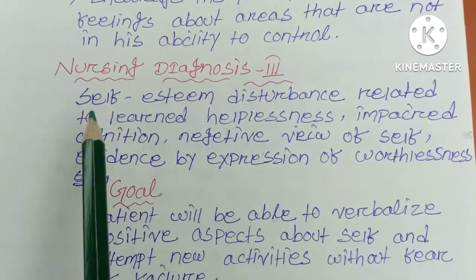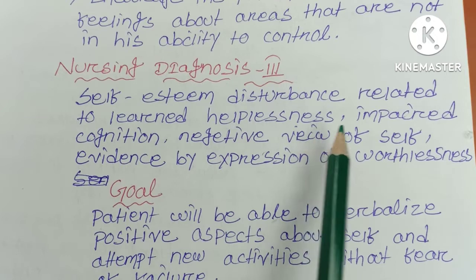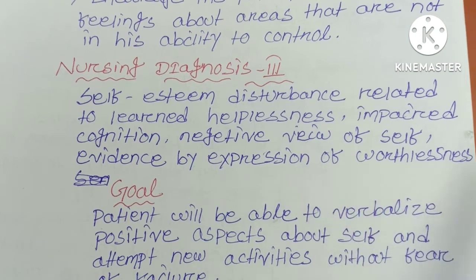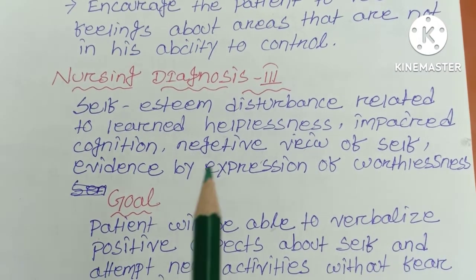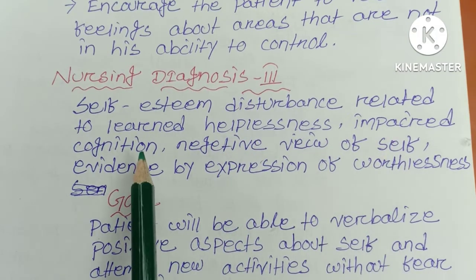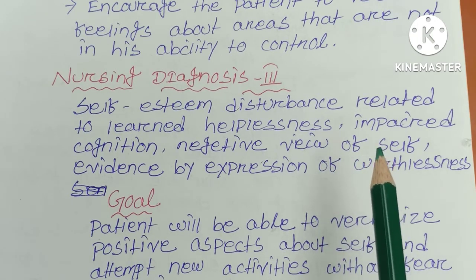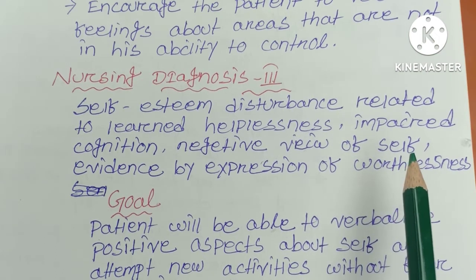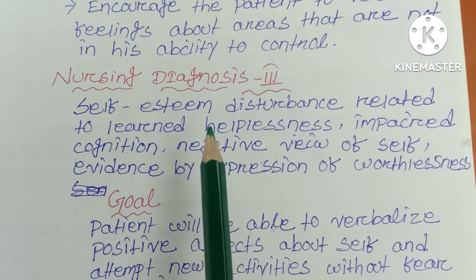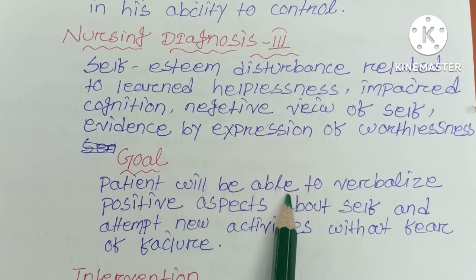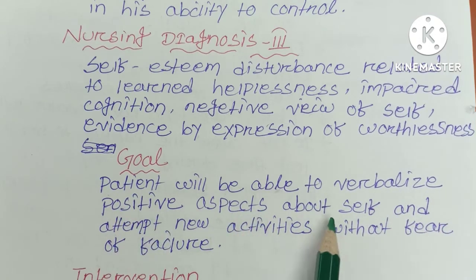Nursing Diagnosis 3 is self-esteem disturbance related to learned helplessness, impaired cognition, and negative views of self, evidenced by expression of worthlessness. The nurse's goal is that the patient will be able to verbalize positive aspects about self and attempt new activities without fear of failure.